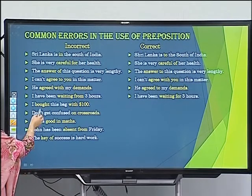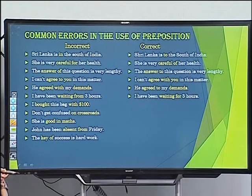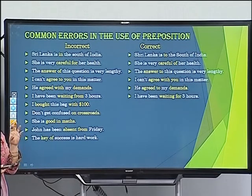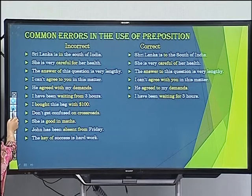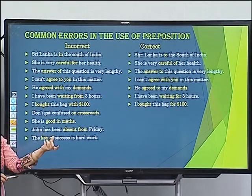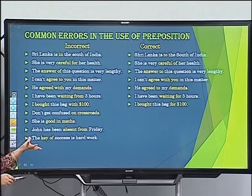Error: 'I bought this bag with 100 dollars.' Whenever we talk about cost or price, we use 'for.' Correct: 'I bought this bag for 100 dollars.' For example, I bought this pen for 10 rupees. When expressing the value or worth of something, use 'for.'